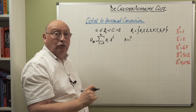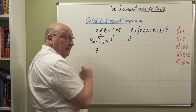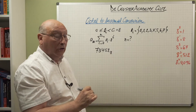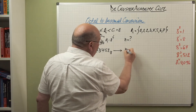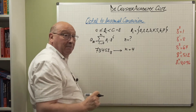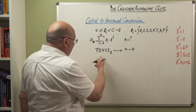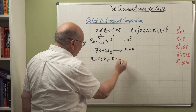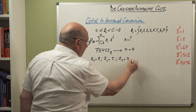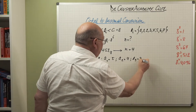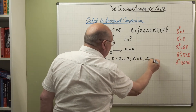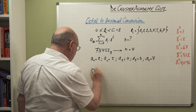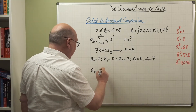We need to determine n first. For the octal number 73452, n is equal to 4. Now we identify the digits: a₀ = 2, a₁ = 5, a₂ = 4, a₃ = 3, and a₄ = 7. What we have to do is write out the formula.